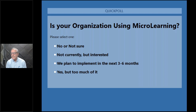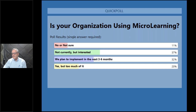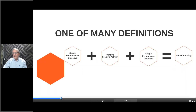The poll results: 37% of our audience isn't currently using microlearning but they are interested. 32% plans to implement in the next three to six months. 20% says they overuse it — though that fourth answer was probably poorly worded, as you may be using it without it necessarily being too much. 11% says they're not sure.